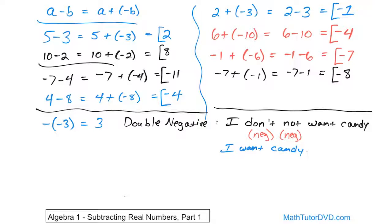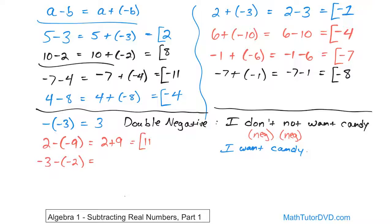Here are quick examples. If you have 2 minus negative 9, you can immediately write that as 2 plus 9 — the two negatives make a positive — and 9 plus 2 is 11. What if you had negative 3 minus negative 2? The two negatives sitting next to each other become a positive, giving negative 3 plus 2. Adding a negative and a positive, you subtract them: 3 minus 2 is 1, and the sign goes with the larger absolute value, the negative 3, so the answer is negative 1.